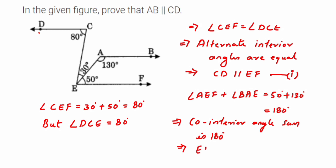So EF is parallel to AB. We have used one property — alternate interior angles are equal — and that is why CD and EF are parallel. Similarly, we used the property that co-interior angles, or angles lying on one side of the transversal, sum to 180 degree, and then the lines become parallel. So using that, we got EF is parallel to AB.